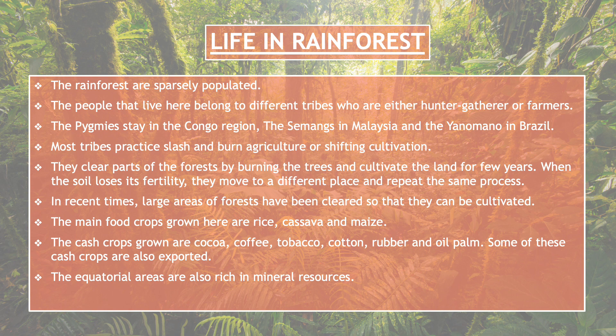In the past few years, large areas of forest have been cleared to make cultivation possible. The main food crops grown here are rice, cassava and maize. The cash crops grown are cocoa, coffee, tobacco, cotton, rubber and oil palm. Some of these cash crops are also exported. The equatorial areas are also rich in mineral resources.